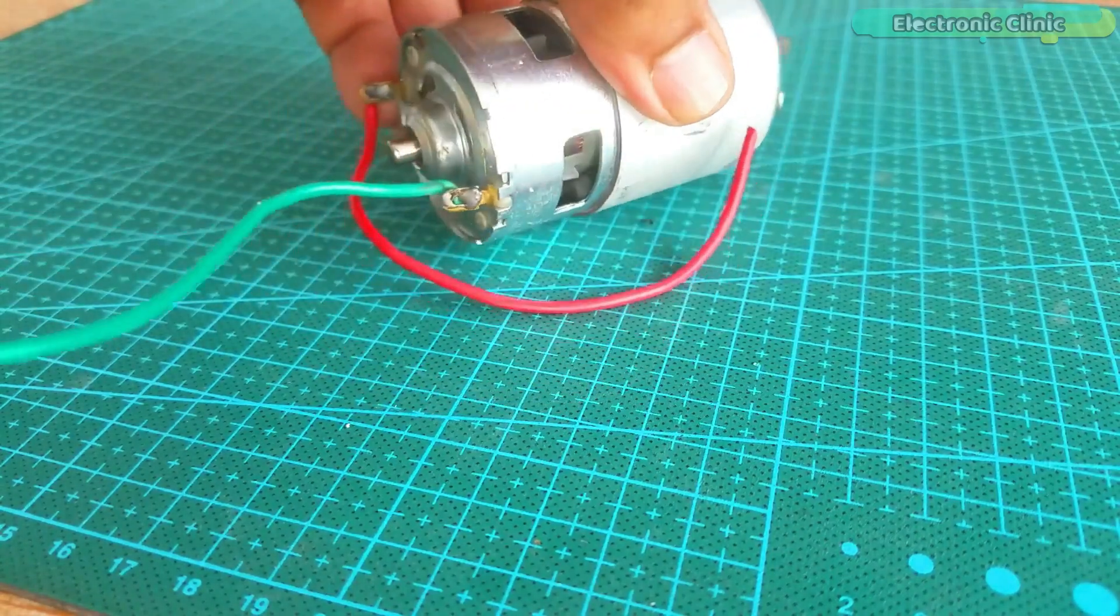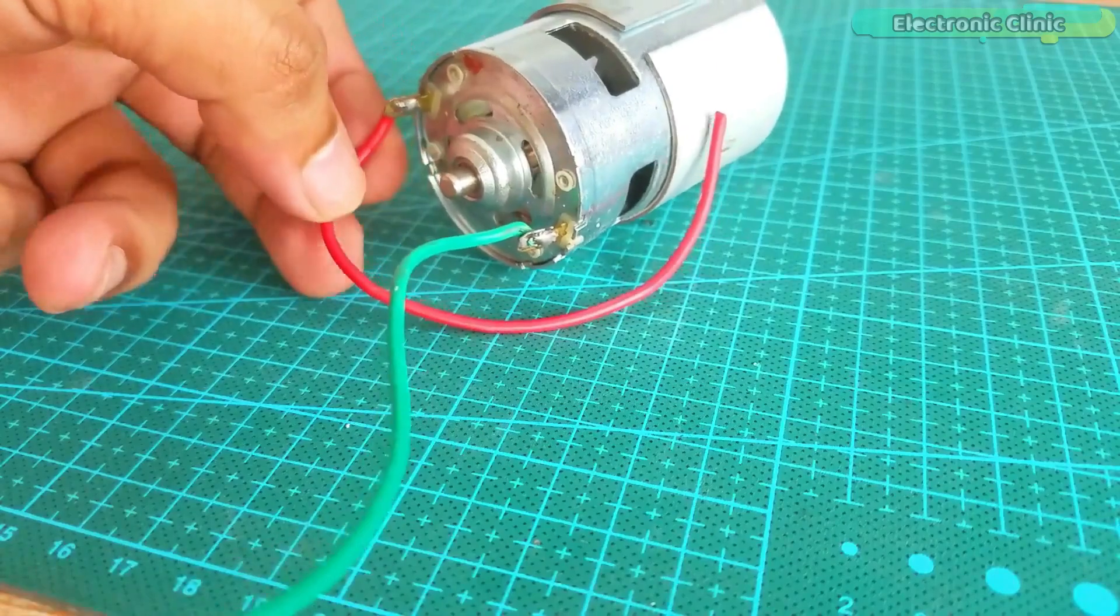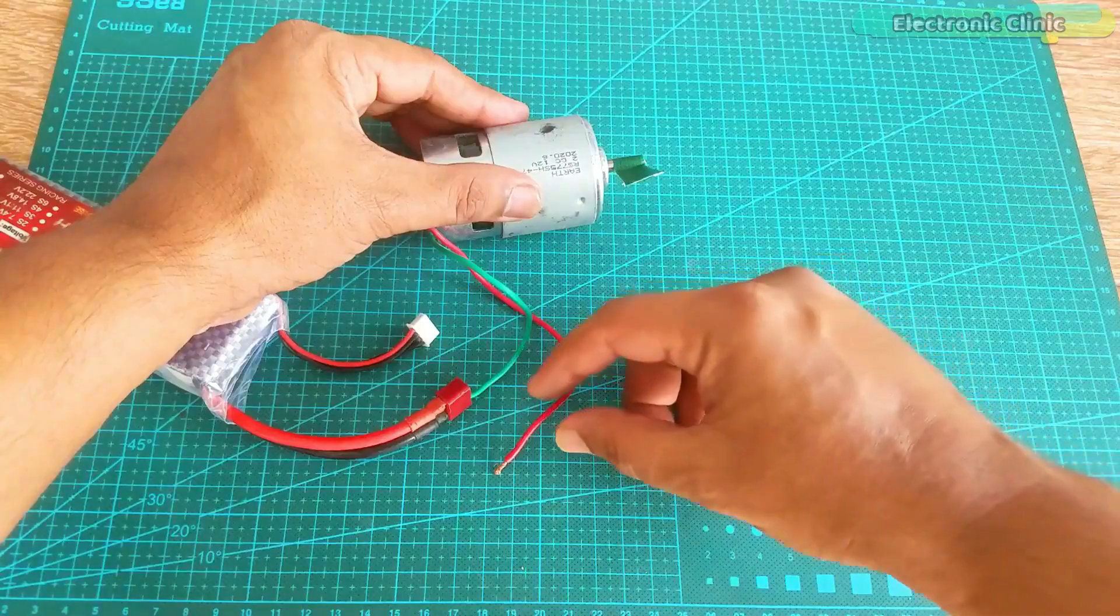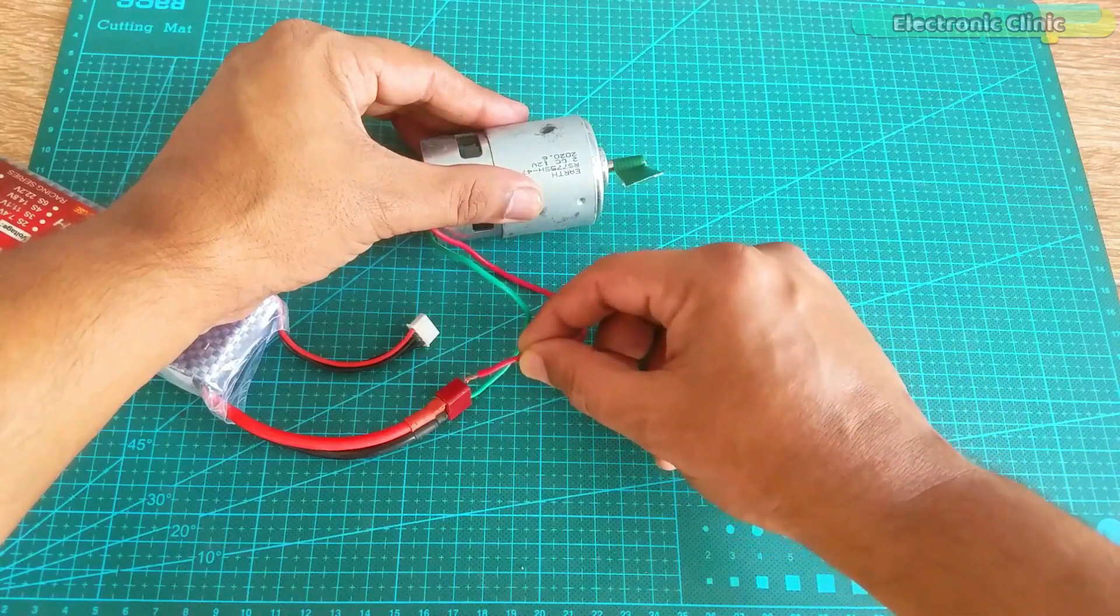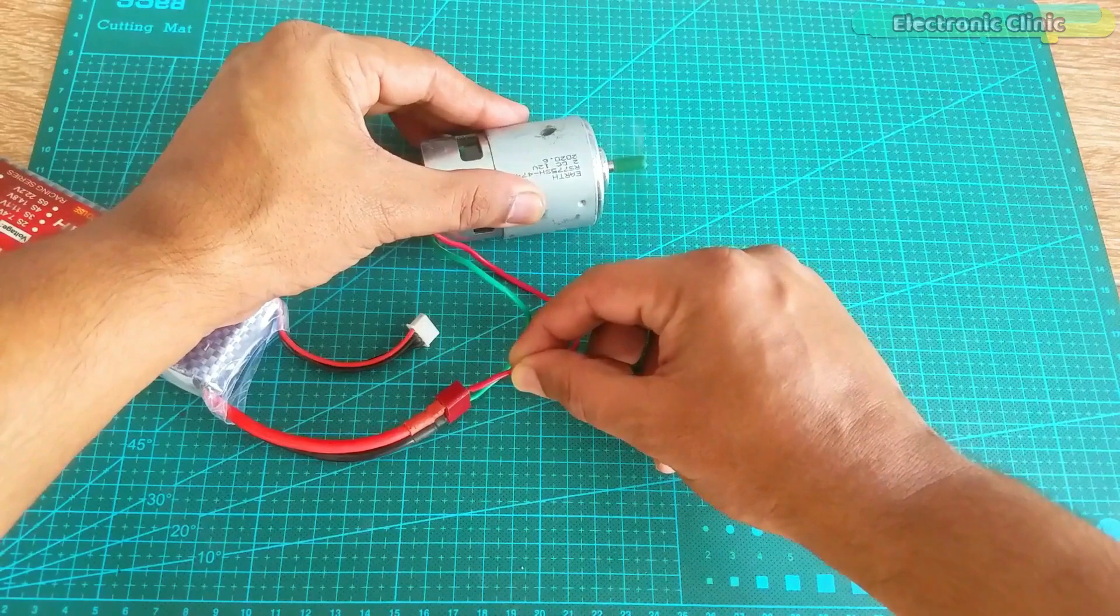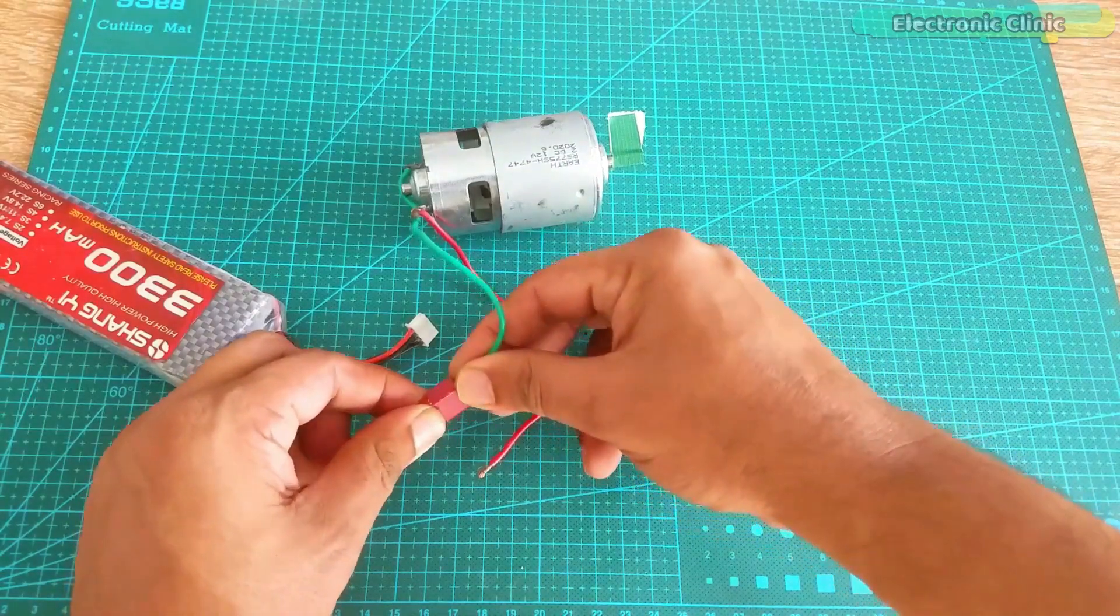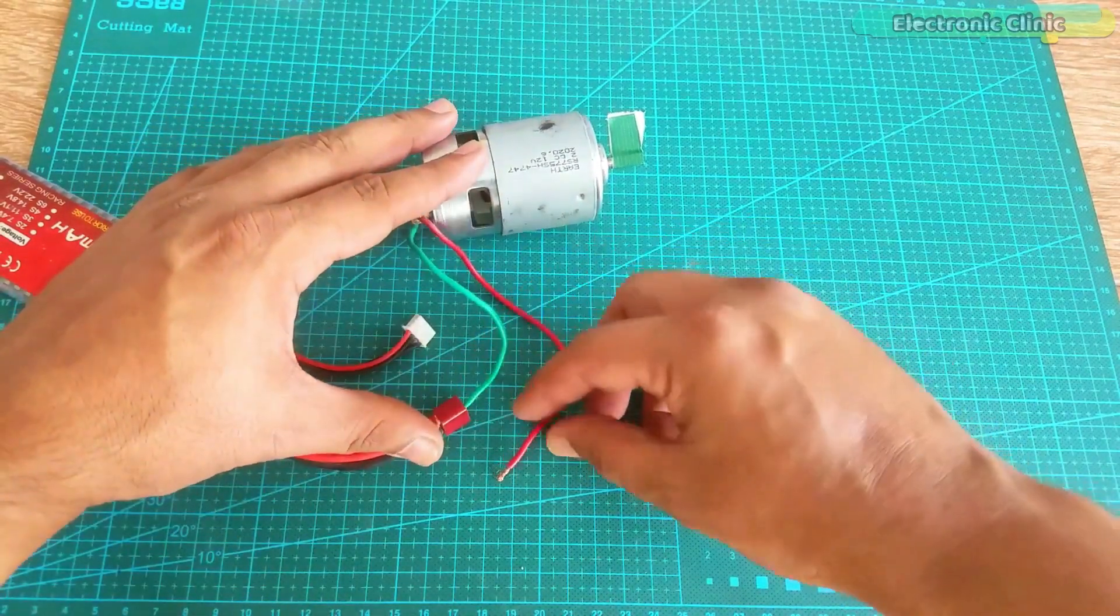Unlike other DC motors, the 775 motor has got these two wires and when connected with desired voltage, the shaft starts spinning. The direction of rotation can be controlled by swapping the voltage wires.